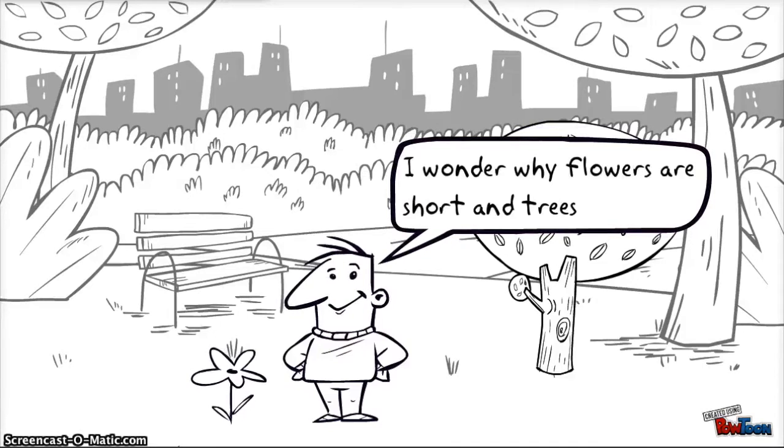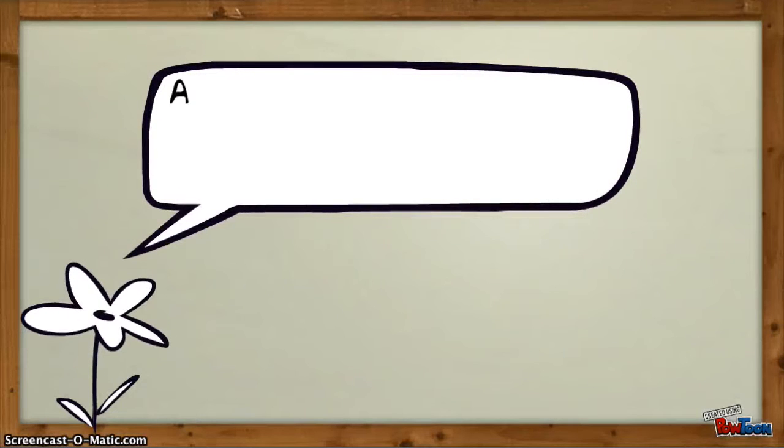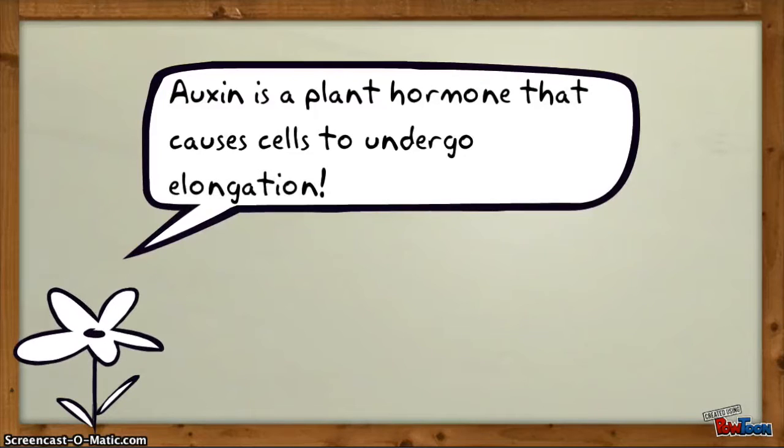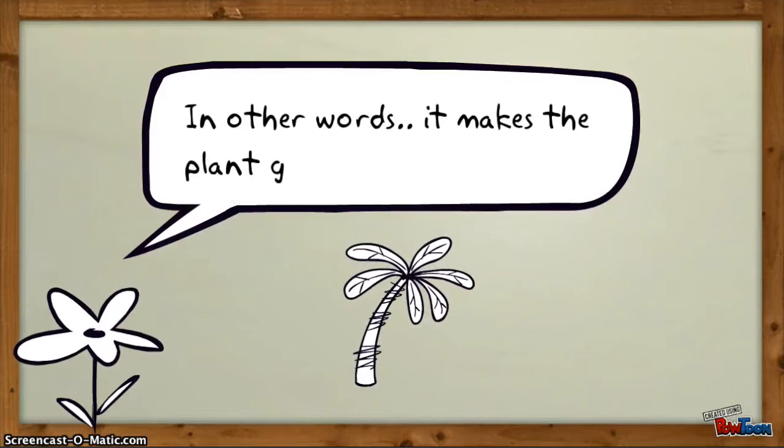I wonder why flowers are short and trees are tall. Let me tell you. Auxin is a plant hormone that causes cells to undergo elongation. In other words, it makes a plant grow.